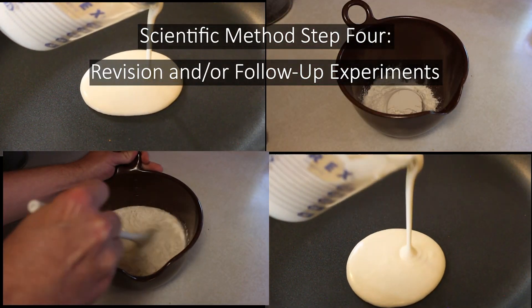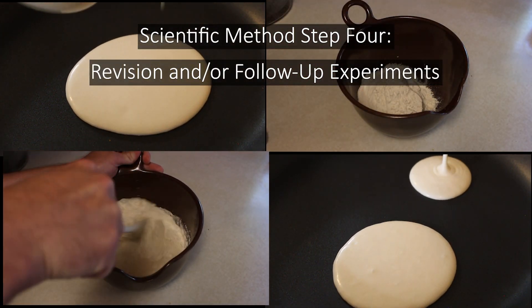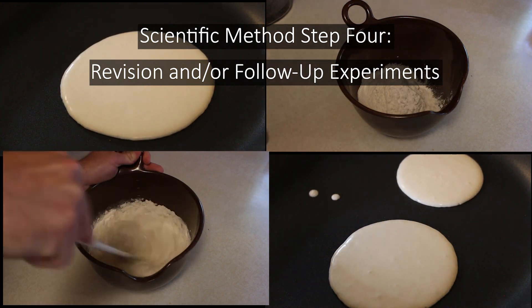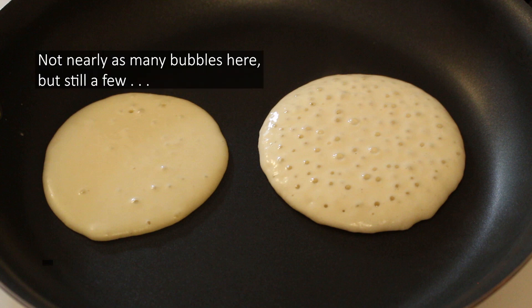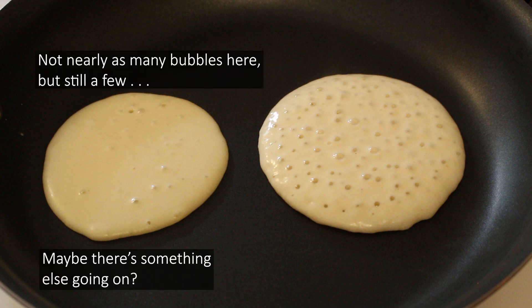And finally, depending on what your experimental results tell you, you may have to revise your hypothesis and/or perform follow-up experiments. In our example, if we had still got bubbles in our pancakes, we could take another look at the ingredients and see if there was something else in there we could omit.